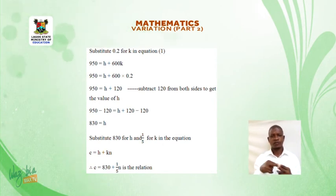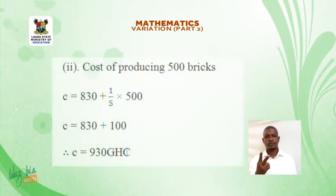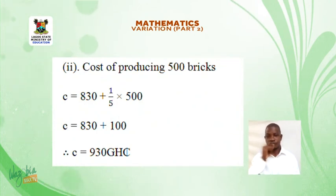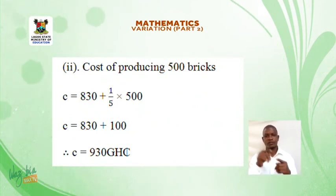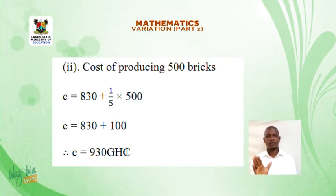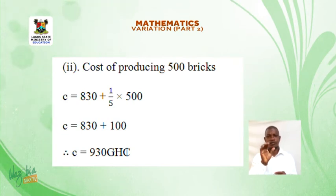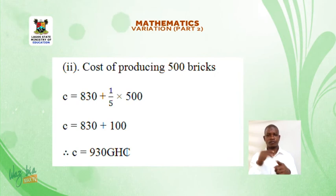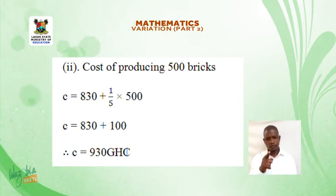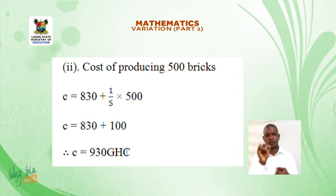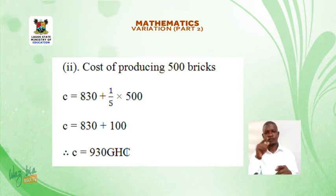Part 2: Cost of producing 500 bricks. C is equal to 830 plus 1 over 5 times 500. C is equal to 830 plus 100. Therefore, C is equal to 930 Ghana cedis.